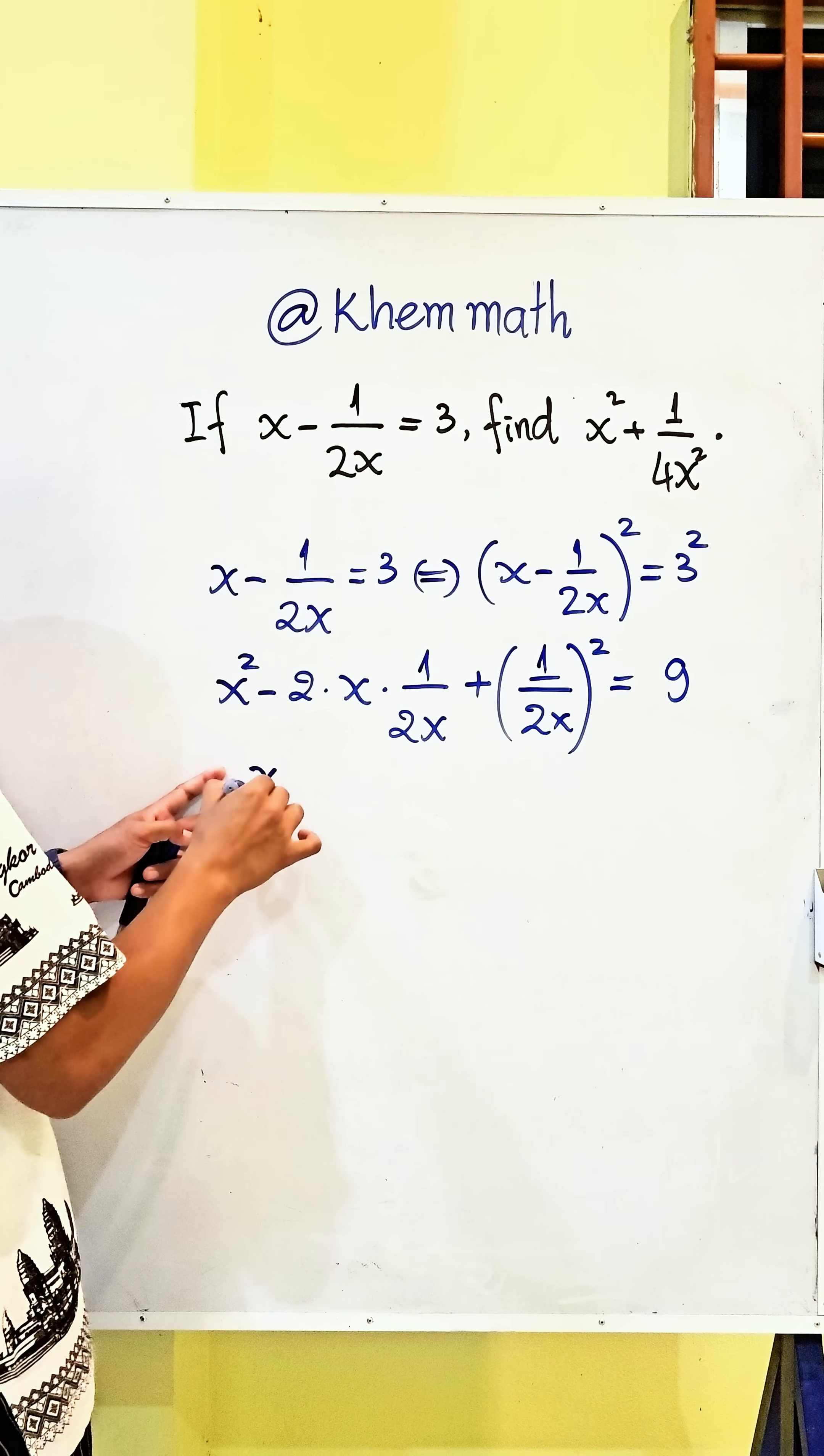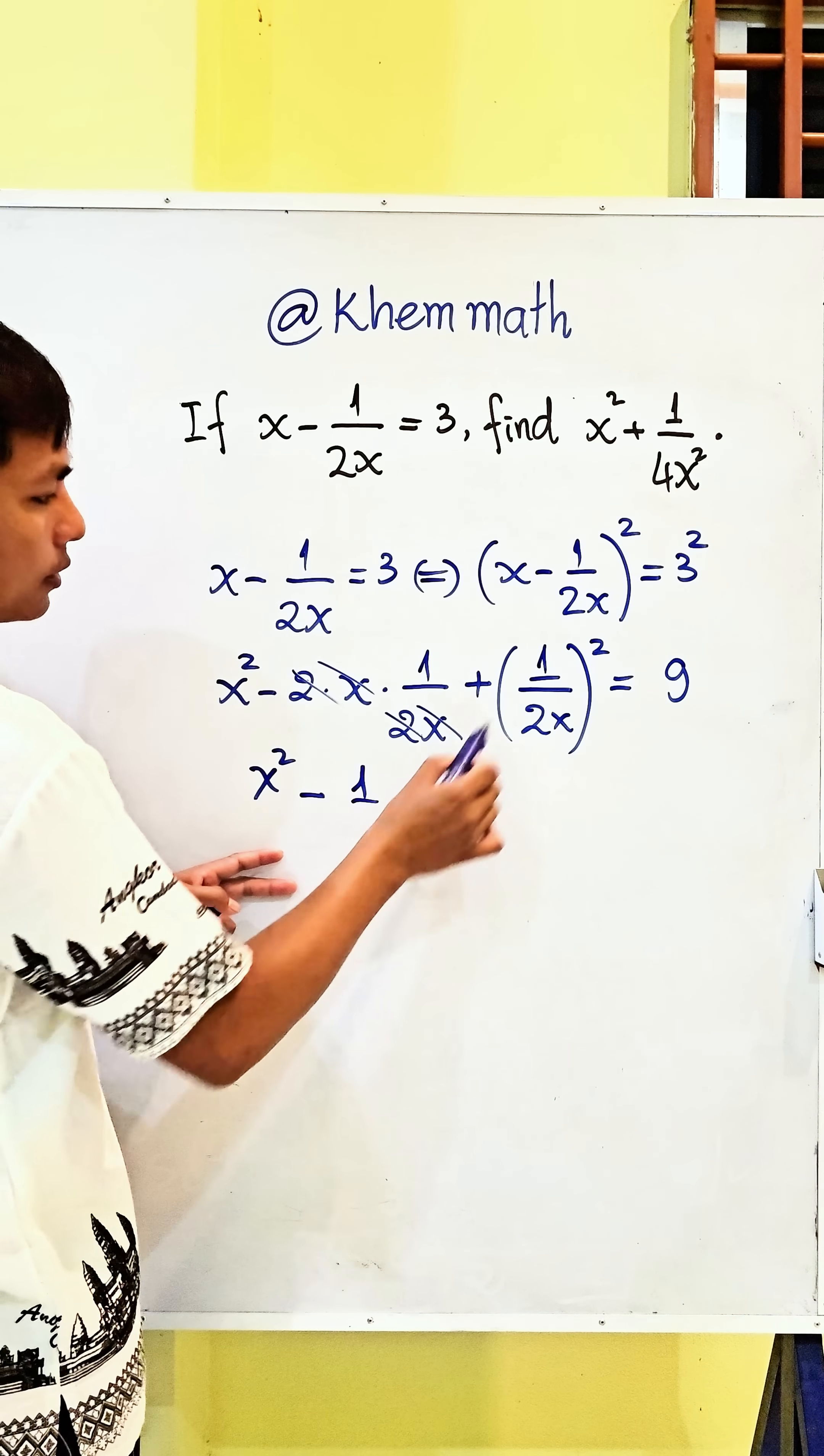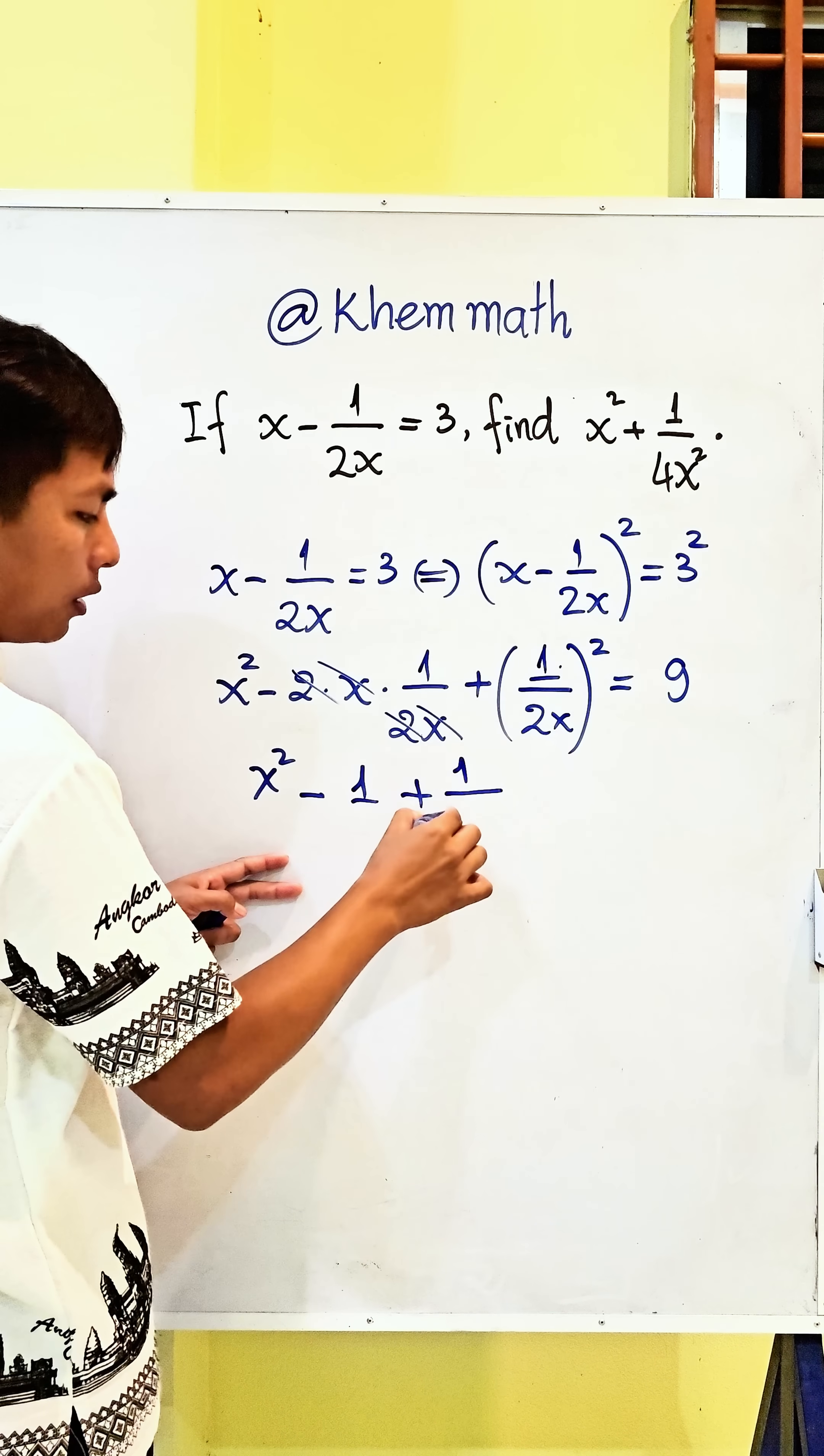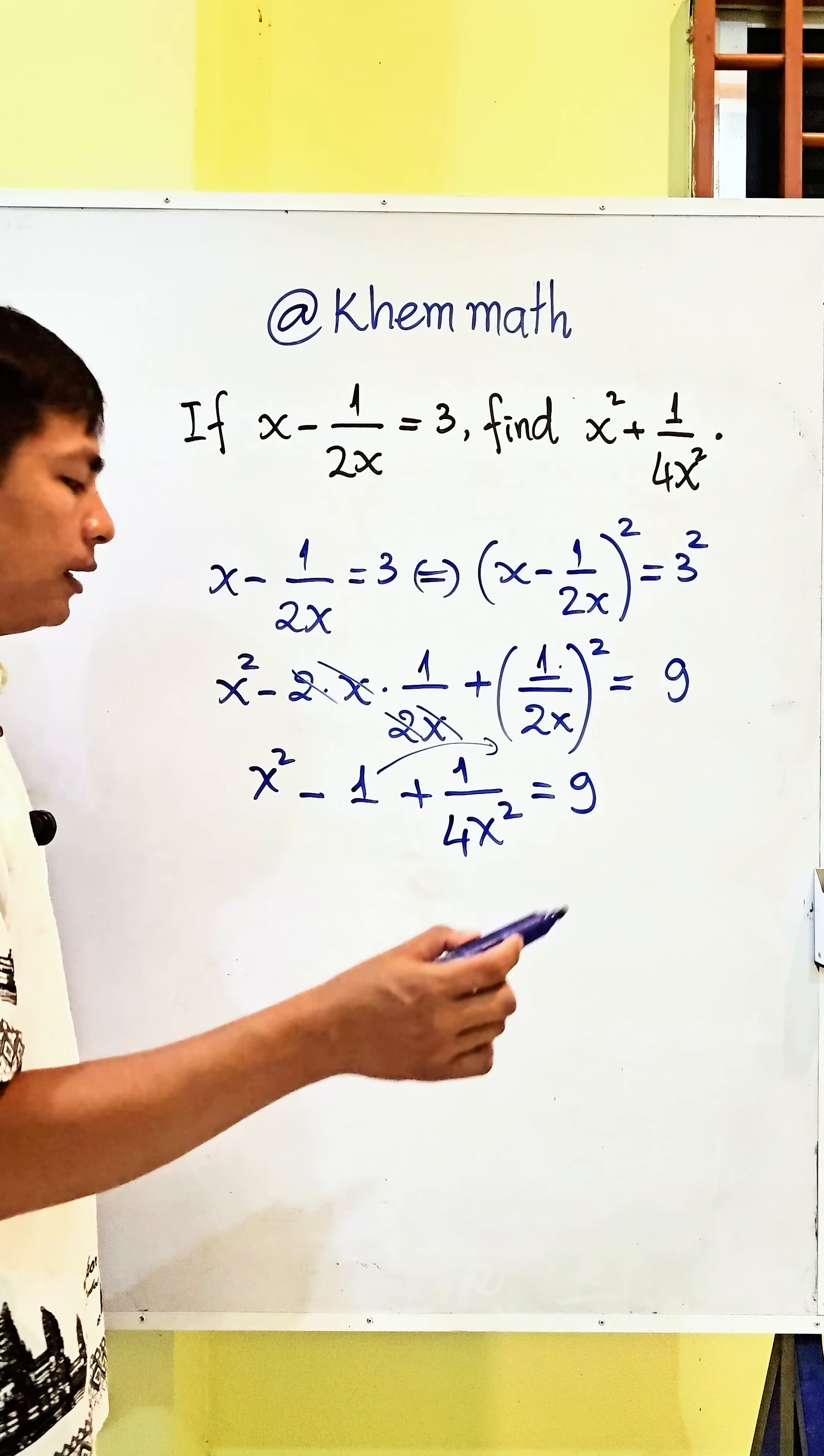And here we get x squared minus, we simplify it, we simplify 2 against 1, and plus here 1 squared equals 1. And here 2x squared equals 4x squared equals 9. And then we change 1 to the right hand side.